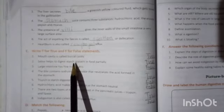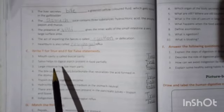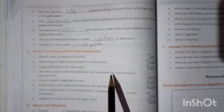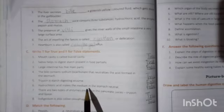Then comes, right, true or false. Mouth cavity is also called buccal cavity. This is true. Saliva helps to digest starch present in food partially. This is also true. Large intestine has five main parts. This is false. Large intestine has three main parts, cecum colon and rectum. The bile contains sodium bicarbonate that neutralizes the acid formed in the stomach. This is true. Trypsin is starch digestive enzyme. This is false. Hydrochloric acid makes the medium in the stomach neutral. This is also false. It actually makes the medium acidic. There are two types of enzymes present in the pancreatic juices. Trypsin and lipase. This is true.